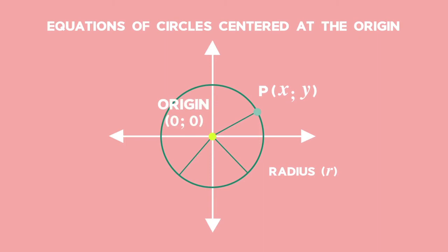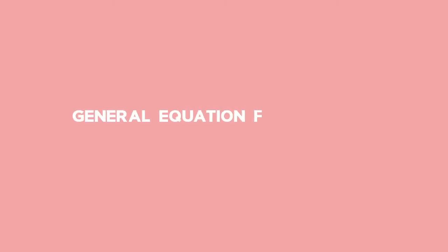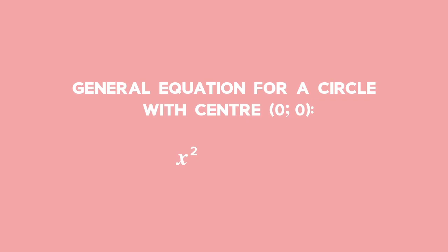then we can use this equation for a circle. The general equation for a circle with the centre at the origin and radius r is x squared plus y squared equals r squared.